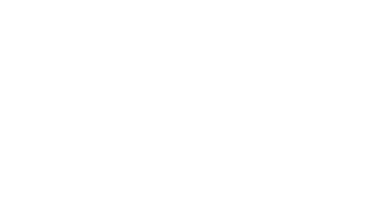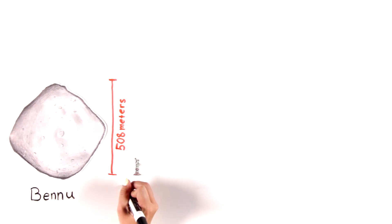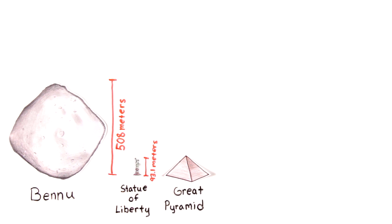Looking at Bennu's actual polar diameter of about 508 meters, the Statue of Liberty in New York City looks tiny, standing only 93.1 meters tall, and the Great Pyramid in Giza, Egypt doesn't look so great next to Bennu, only standing 147 meters tall.